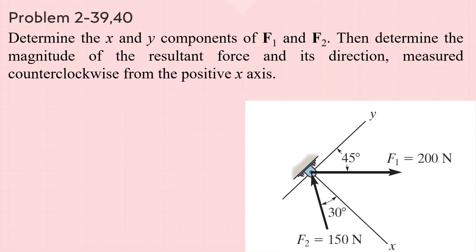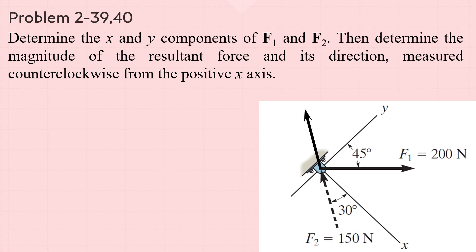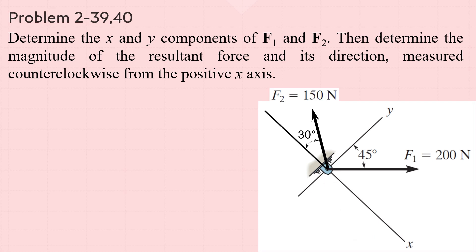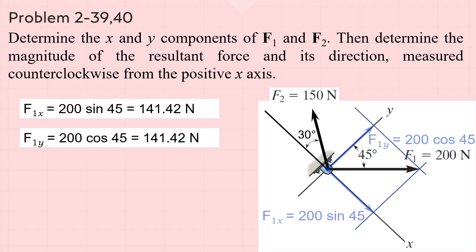Another problem: for the shown two forces, determine the x and y components of F1 and F2, then determine the magnitude of the resultant force and its direction measured counterclockwise from the positive x-axis. We can move the vector along its line of action, so let us move F2 to make its tail coincide with F1's tail. Resolving F1 gives F1x equals 200 sine 45 equals 141.42 newtons, and F1y equals 200 cosine 45 equals 141.42 newtons, both in the positive direction.